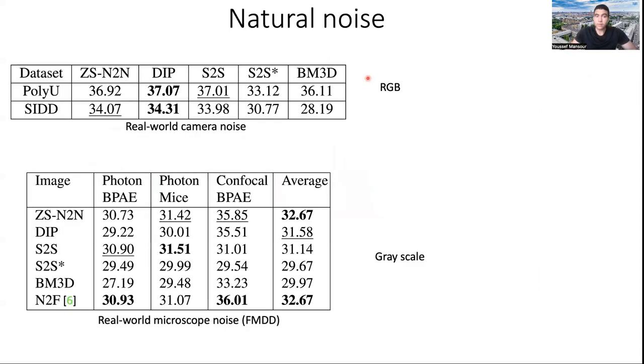For natural noise, we tested on real-world camera noise for two datasets, on RGB images and on microscope noise with grayscale images. And if you look at the numbers, you're going to see that all methods work very similarly, except, of course, for BM3D. That is only going to work well for Gaussian noise, as we saw in the previous slide.